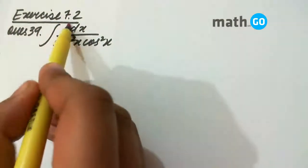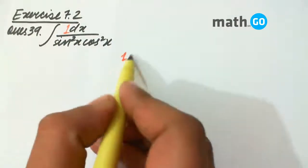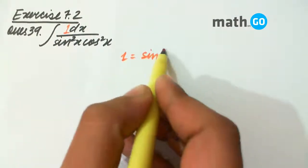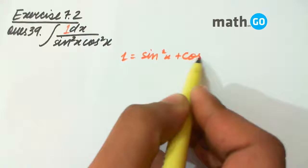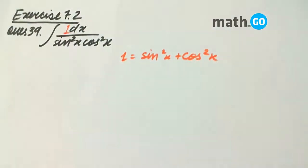Exercise 7.2, question number 39. It is again a very simple question but with a small trick. Now what is the trick?